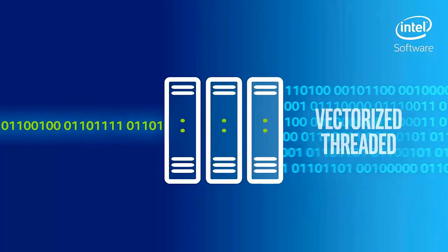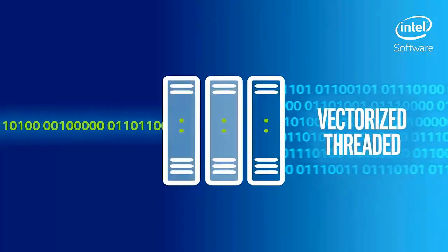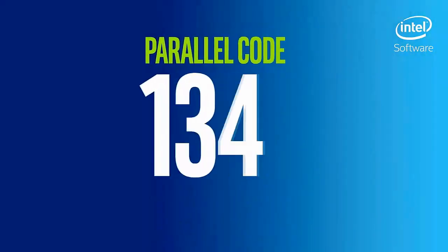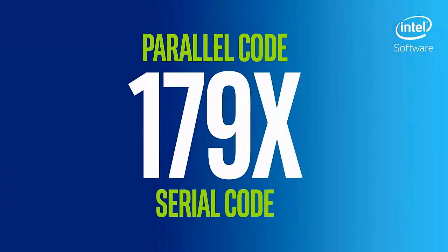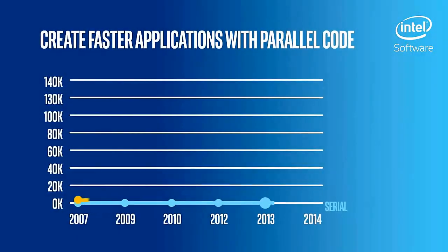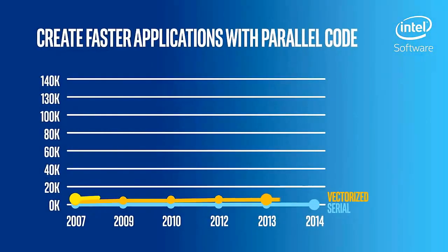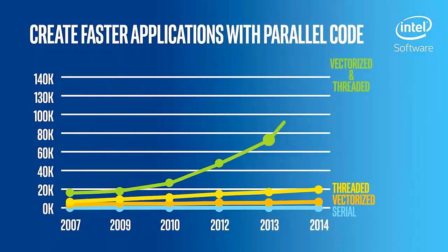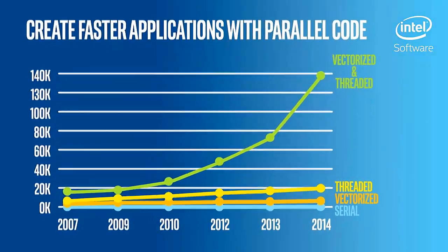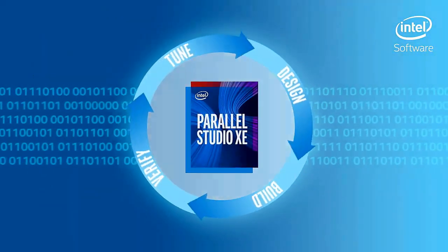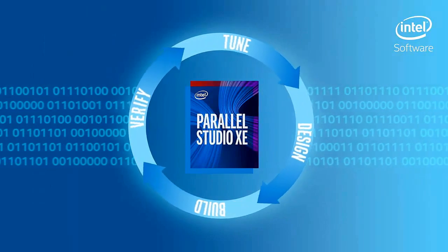Parallel code that is both vectorized and threaded can run more than 100 times faster than serial code. So how can you take advantage of this performance without getting a degree in parallel programming? Enter Parallel Studio XE.